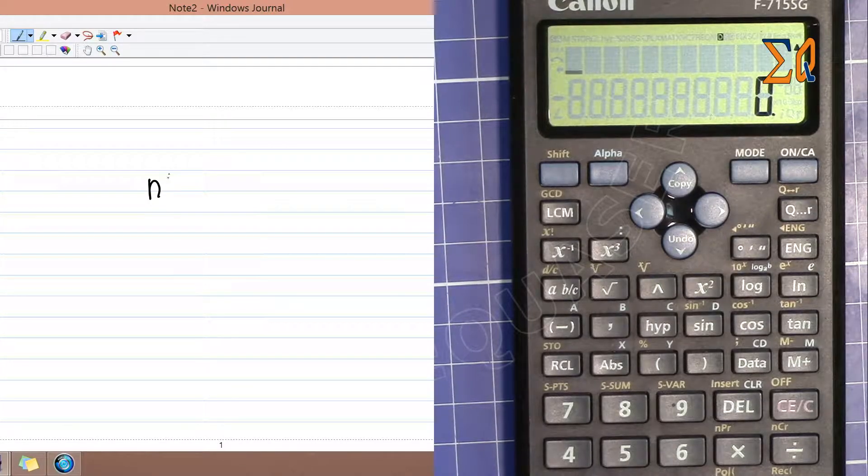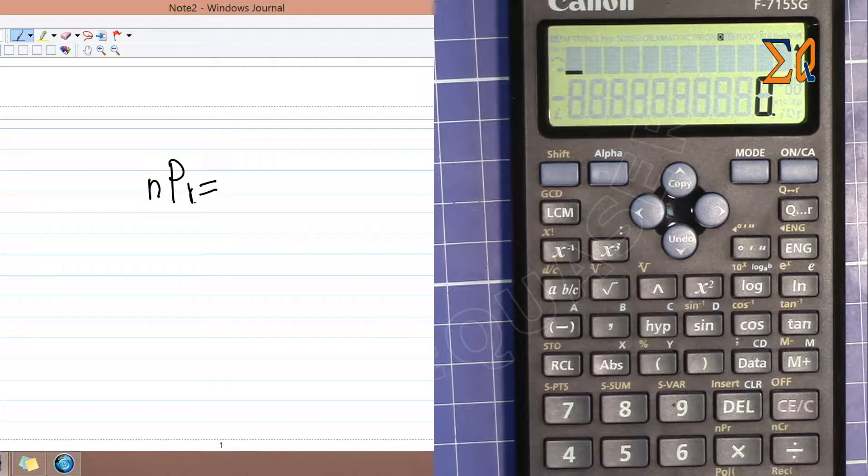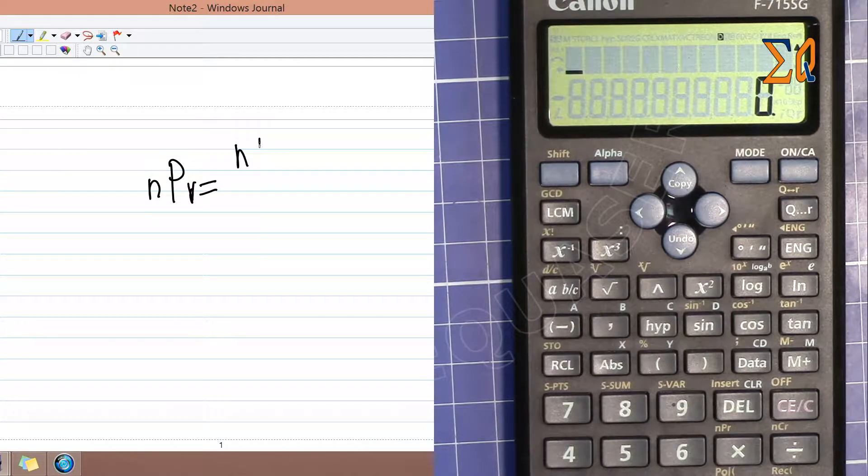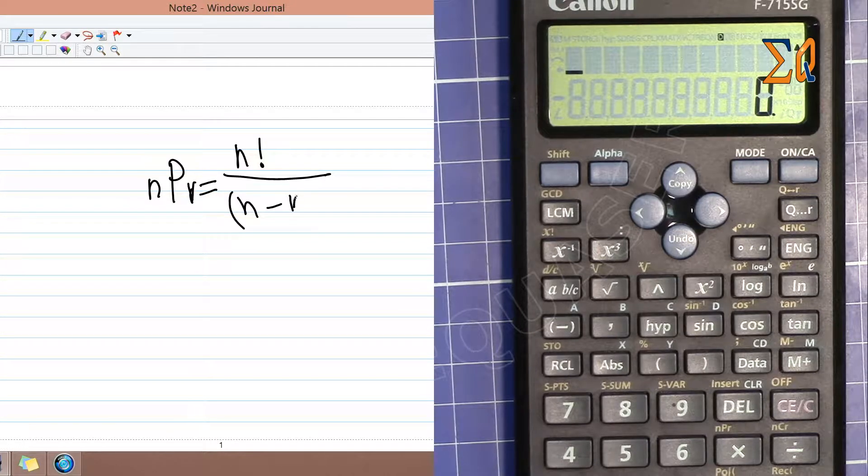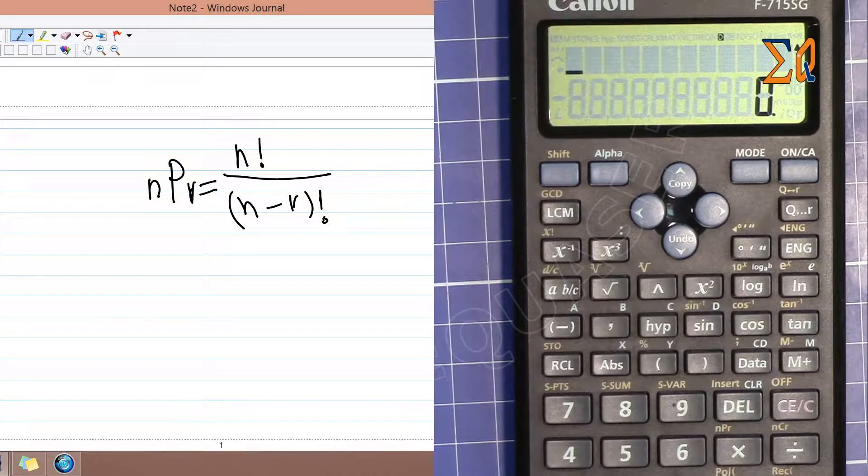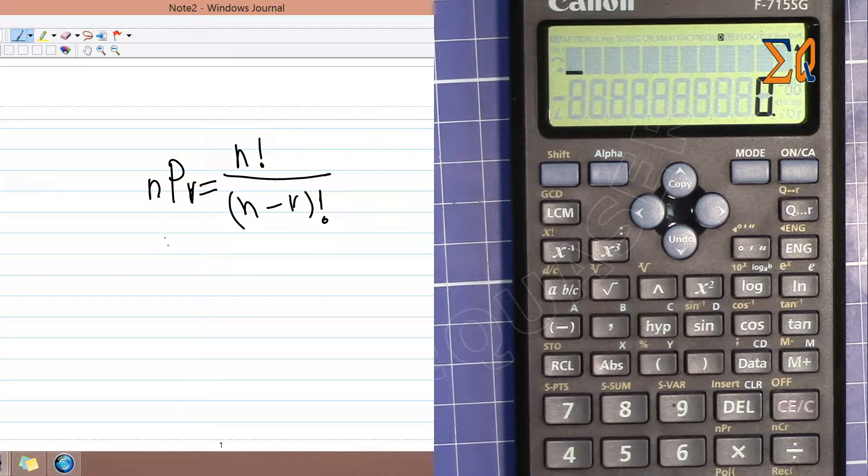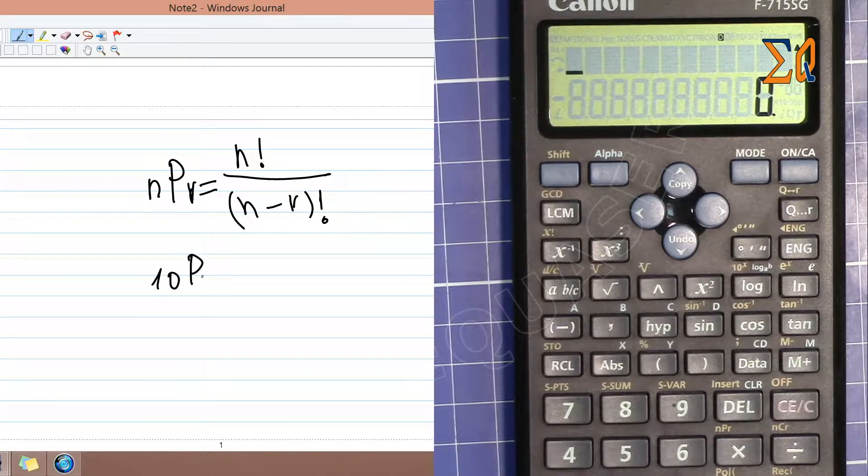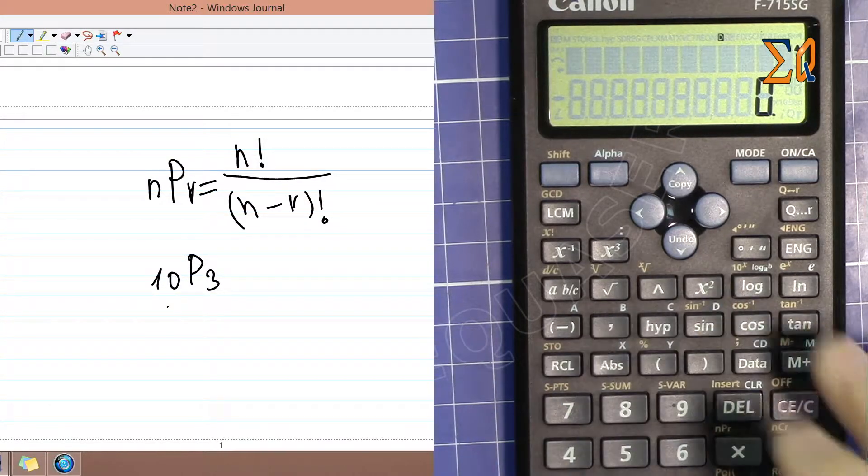For permutation, let's say we have nPr. Permutation is n factorial over (n-r) factorial. For example, if you have 10 with permutation of 3, so 10P3.